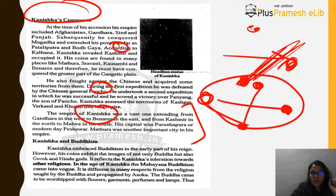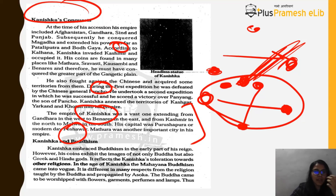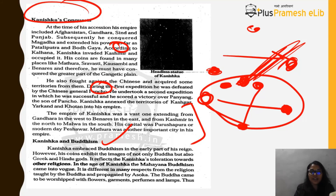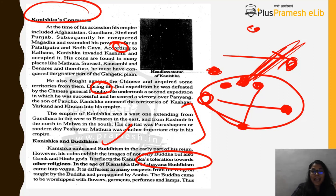Kanishka embraced Buddhism in the early part of his life, though his coins also depict Hindu and Greek gods, reflecting religious tolerance. During his age, Mahayana Buddhism got firmly established. The Fourth Buddhist Council was held in Kashmir at a place called Kundalvana, near Srinagar. About 500 monks attended; the president was Vasumitra and the vice president was Ashvaghosha. The council prepared an authoritative commentary on the Tripitakas and Mahayana doctrine took its final shape.